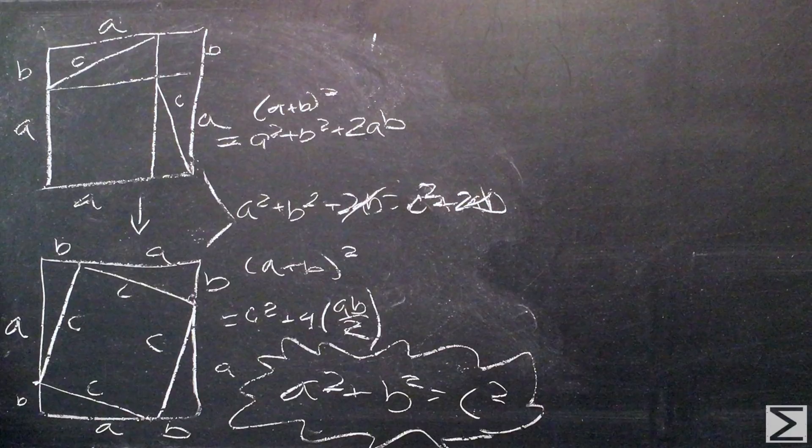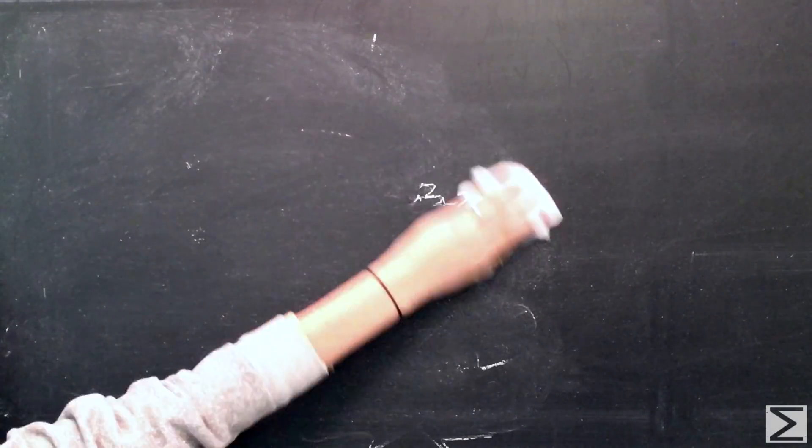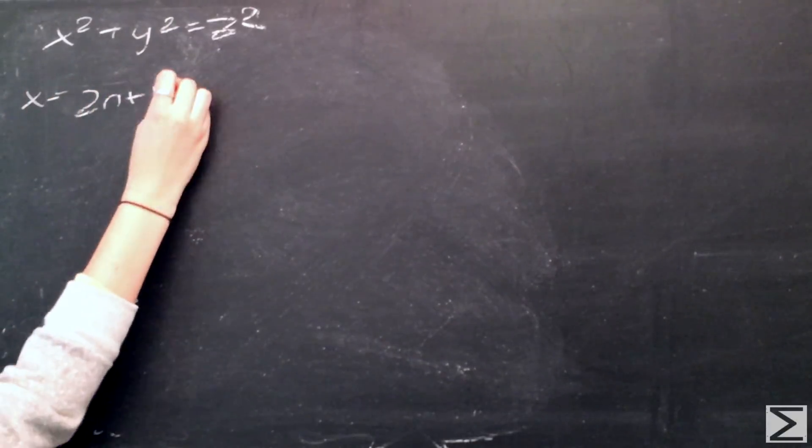The discovery that there was a geometrical way to relate the sides of a right triangle led to the problem by the same name, the Pythagorean problem. The problem asks to find all positive integers of the Pythagorean equation.